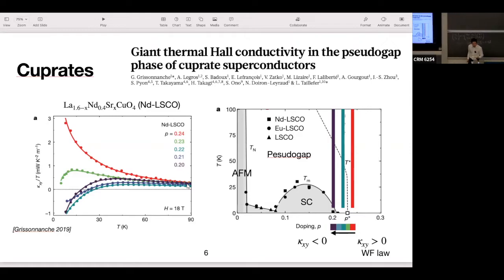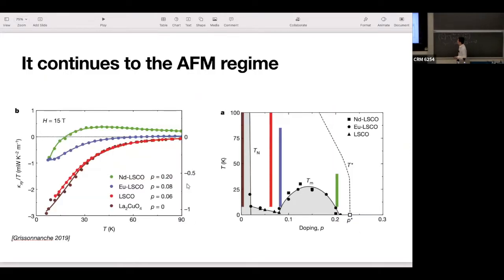This continues. These are not exactly the same materials, but they're similar. We keep going down in the pseudo-gap phase. You find that this trend continues until you reach p equal to zero, which is just the parent compound of the cuprate, the lanthanum cuprate. You find at p equal to zero, this large negative thermal Hall conductivity.